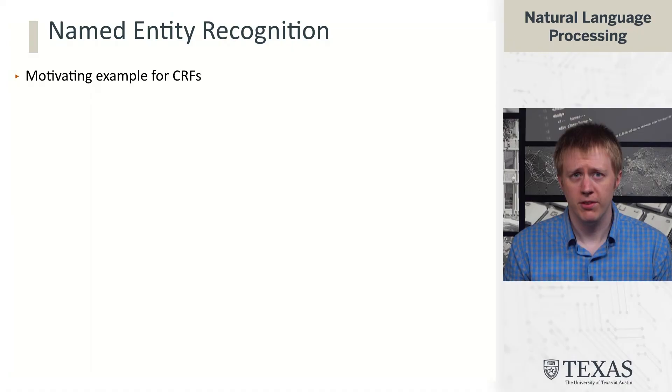In this segment we're going to talk about conditional random fields. This is going to be a model alternative to hidden Markov models that is still going to allow us to incorporate sequential structure but is now going to allow us to do it in the context of a discriminative model. But first let's talk about named entity recognition which we're going to use as our motivating example here.